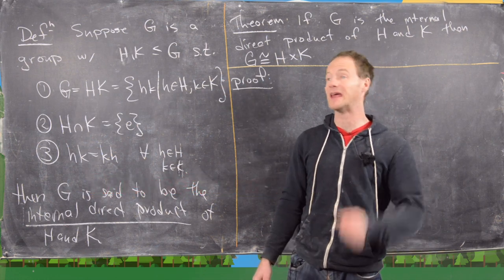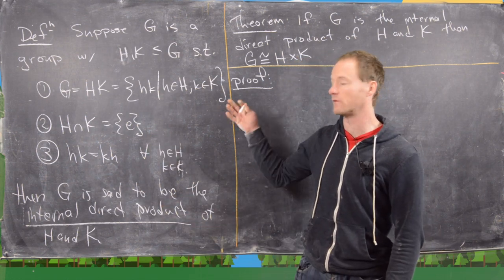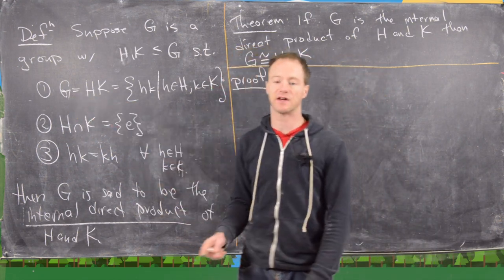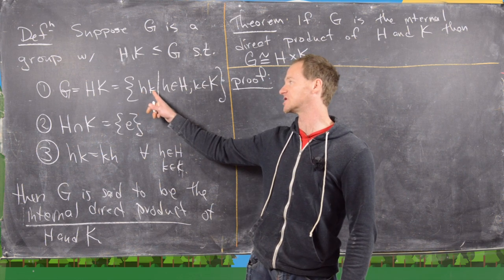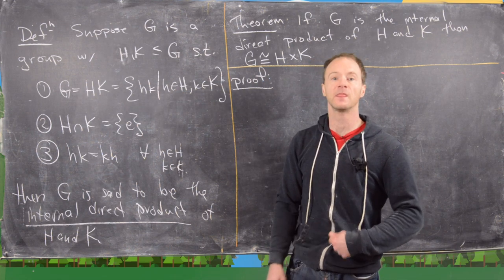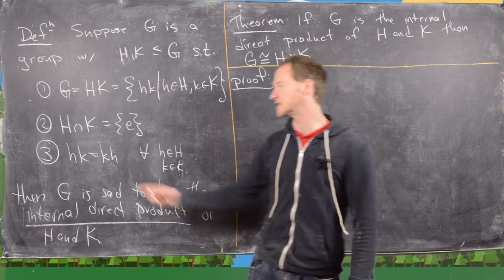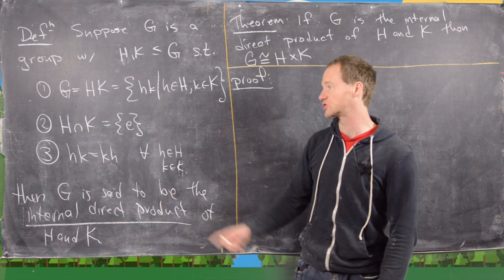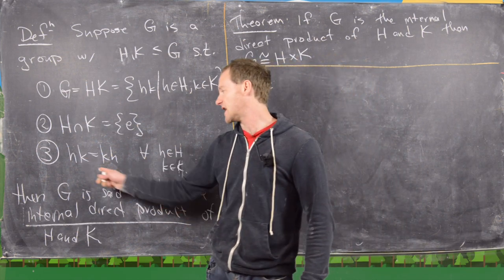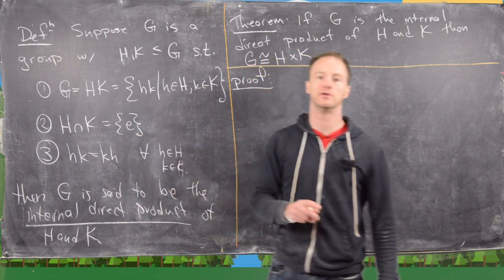Let's suppose that G is a group and H and K are subgroups of G satisfying the following three conditions. First, G equals HK — every element of G can be written as an element of H times an element of K. Second, the intersection of the two subgroups is trivial, containing only the identity. And finally, hk equals kh for all h in H and k in K; in other words, elements from these two subgroups commute with each other.